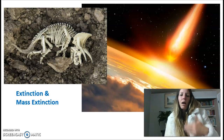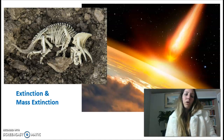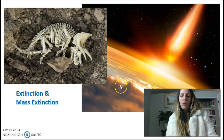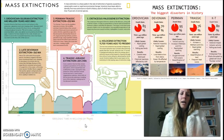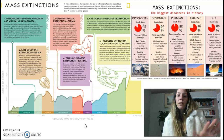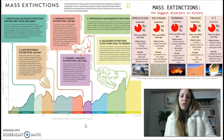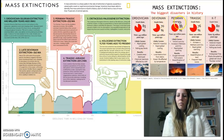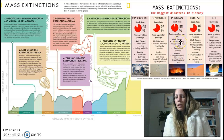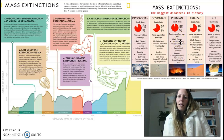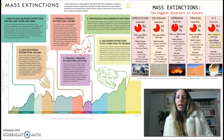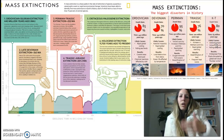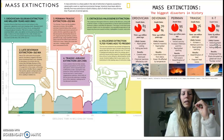Extinction is the death of a species — that species is no longer on the planet. Most mass extinctions are due to some type of catastrophe like an asteroid. What a lot of people don't realize is that we've actually had five major extinctions throughout our world's history. The Permian age saw 95% of our organisms go extinct, and during the K-T event — when the dinosaurs died — 80% of our organisms went extinct. Even though you have mass extinctions, life will find a way.